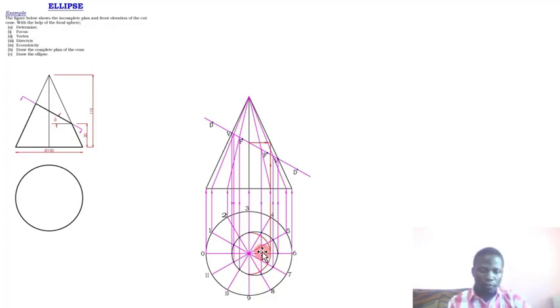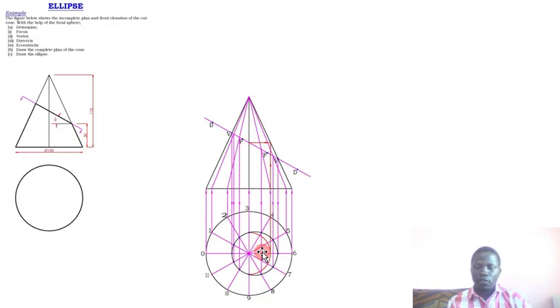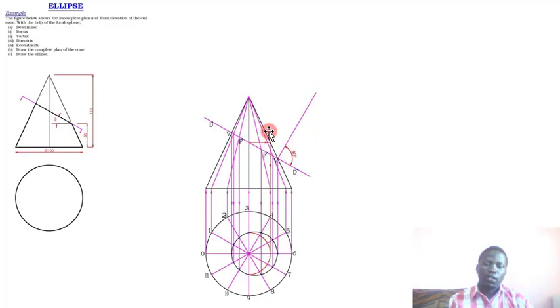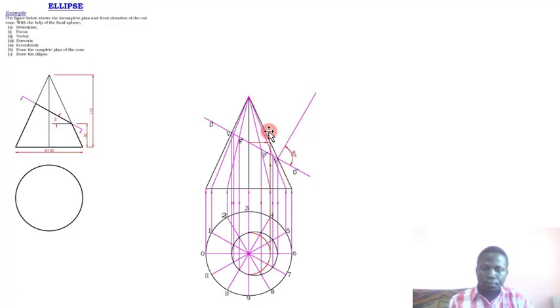When you do so, you have the complete plan. Now we move to part c — drawing the ellipse. The true shape of the section is the ellipse itself. To draw it, we view perpendicular to the sectioning line on the cut surface, that is, at 90 degrees to it.